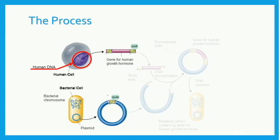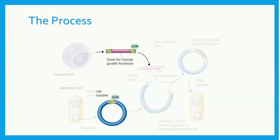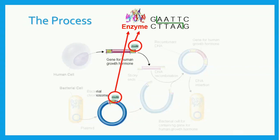First, the target gene from the human DNA — in this case, human growth hormone — is isolated. A bacterial plasmid is extracted from a bacterial cell. Enzymes are applied next. The enzyme here is ECO-R1. Remember, enzymes act as scissors, cutting the DNA at a specific sequence.